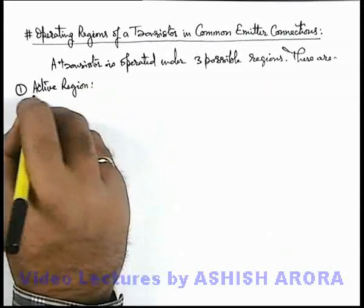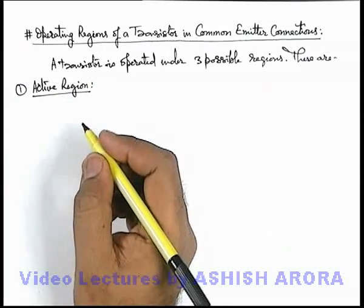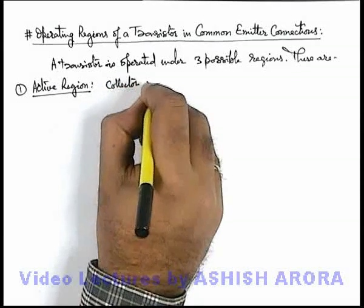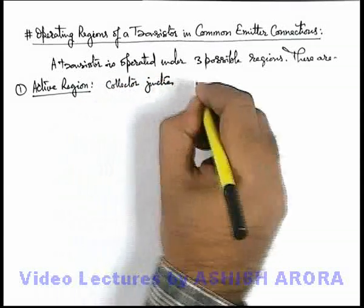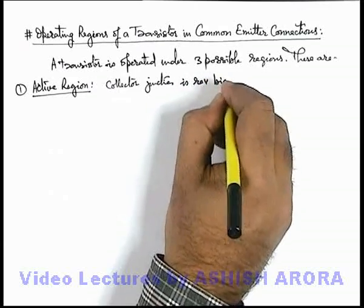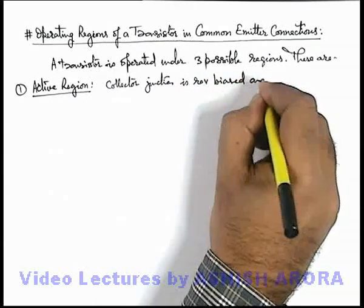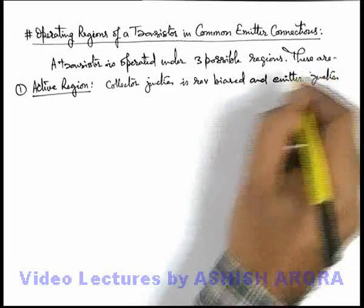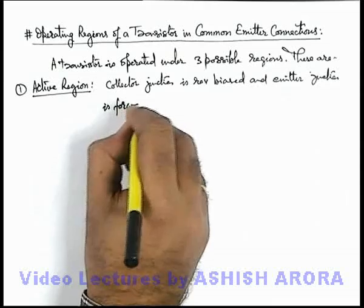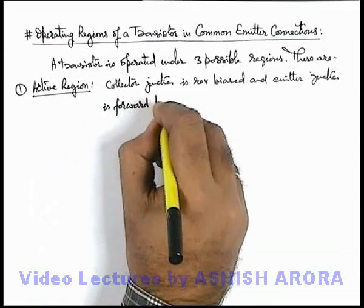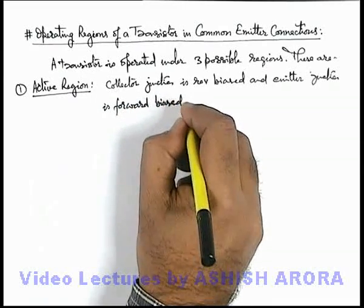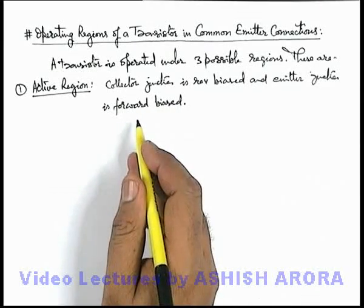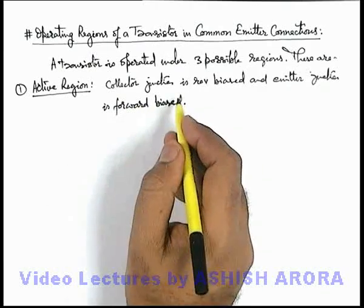The very first one is the active region. This is the situation when the collector junction is reverse biased and the emitter junction is forward biased. We can recall from the beginning that under normal operating conditions of a transistor, its emitter junction is forward biased and its collector junction is reverse biased.